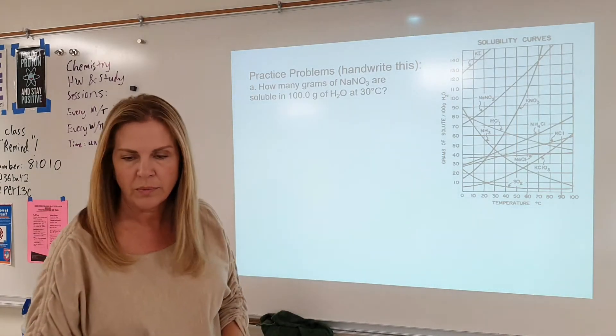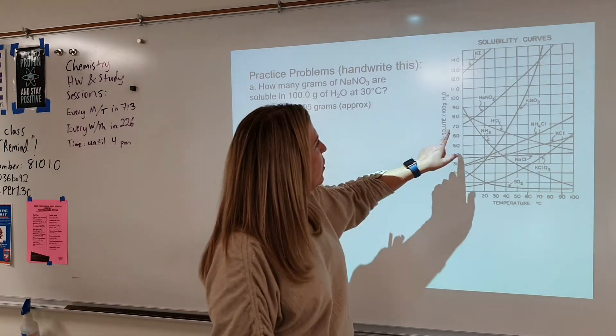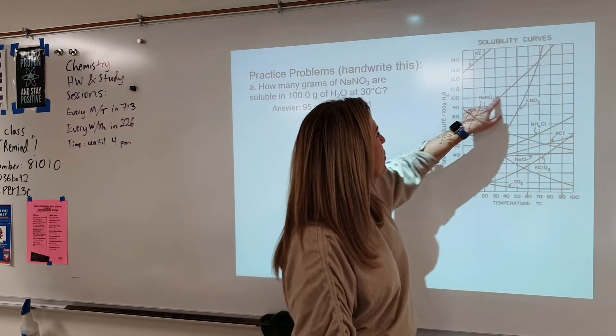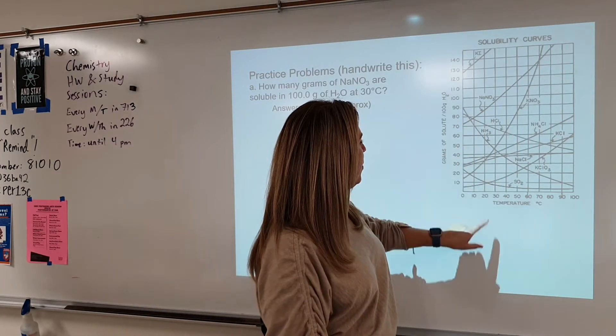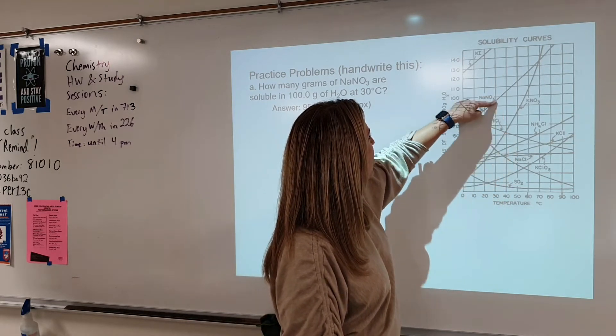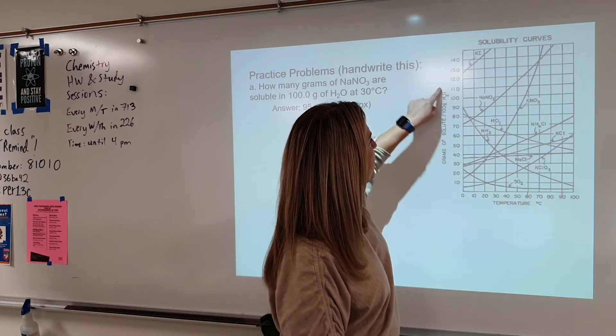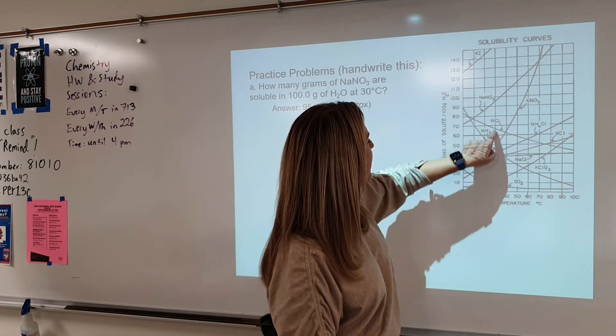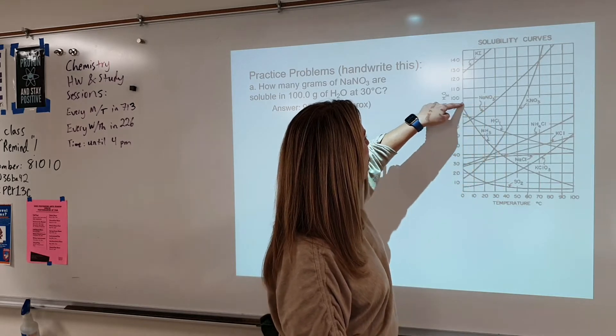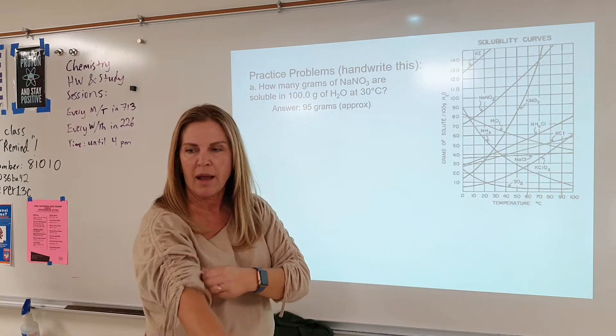So what we're going to do, sodium nitrate, we're going to come here. Here's the line for sodium nitrate. We're going to go to 30 degrees Celsius. So we're going to follow that up to where it hits the line. We're going to come across. Now remember, this is grams per 100 grams. So coming up at 30, coming across, we can see that that's going to be approximately 95 grams.